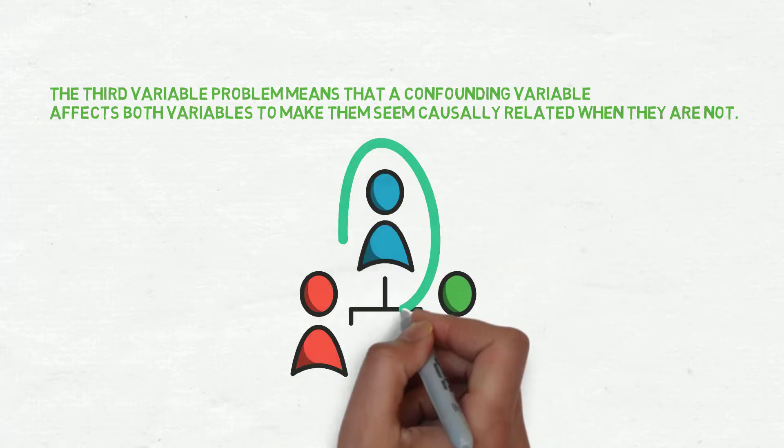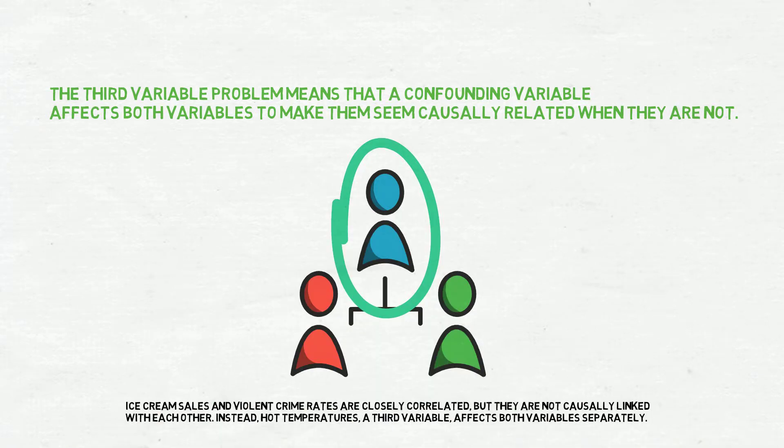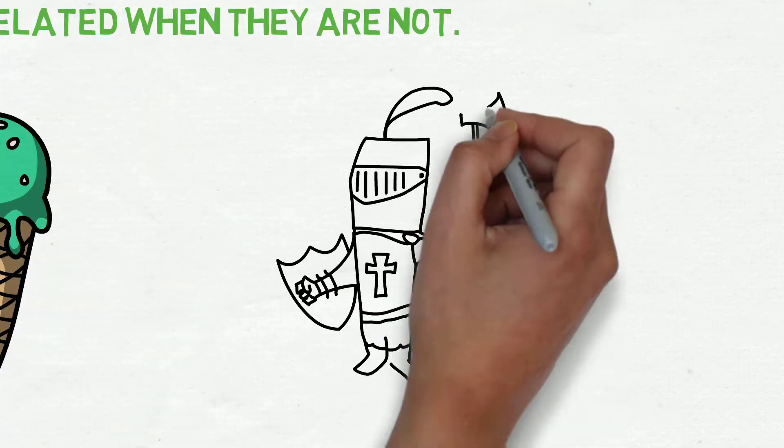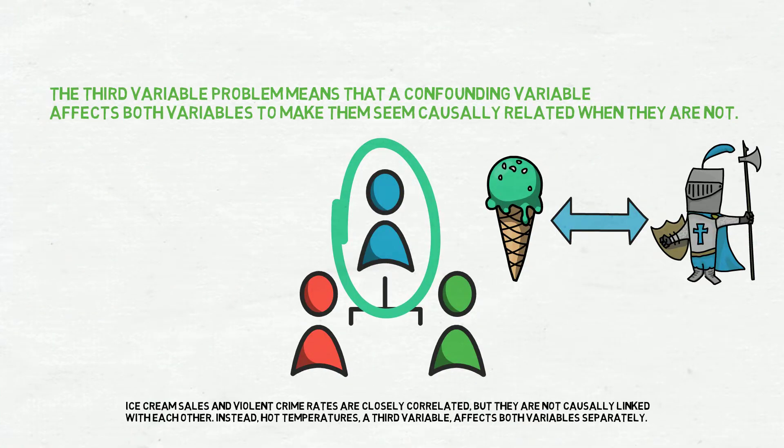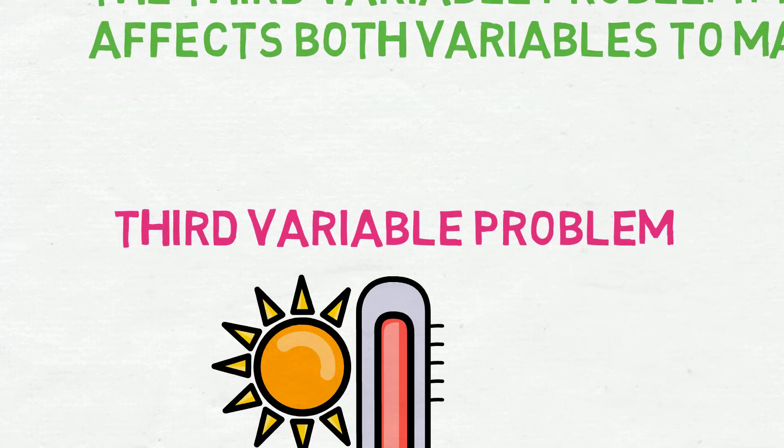Let's take an example: ice cream sales and violent crime rates are closely correlated, but they are not causally linked with each other. Instead, hot temperature is the third variable that actually affects both variables separately.